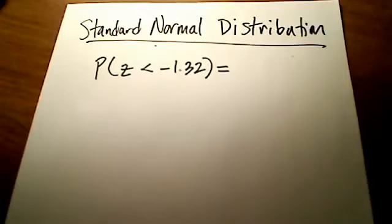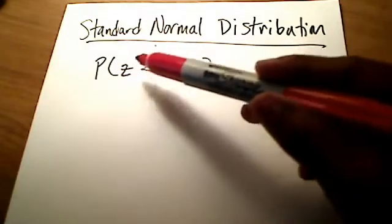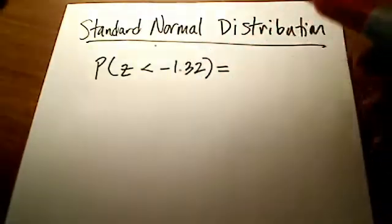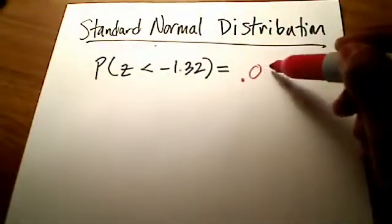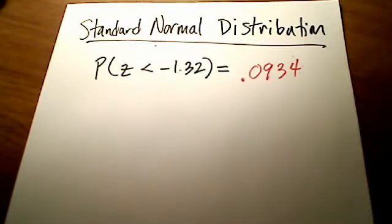In this short video, I want to show you how to play the game backwards. What I mean by that is this: in a previous video, I showed you that if we were looking for the probability that we had a z less than negative 1.32, we had an area of 0.0934. But what I mean by playing the game backwards is this.